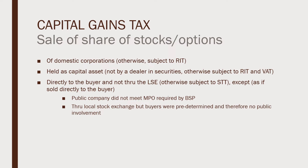Exceptions — these two circumstances are treated as if sold directly to the buyer: first, the public company did not meet the minimum public ownership required by the BSP; and second, even if through the local stock exchange, the buyers were already predetermined and therefore there was no public involvement.